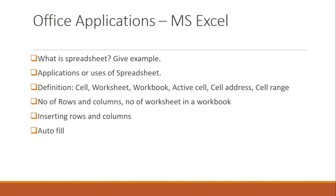Learn the definitions of key Excel terms: cell, worksheet, workbook, active cell, cell address, and cell range. A worksheet is a single page, and a workbook is a collection of worksheets. Also see the address of the first cell, which is A1, the address of the last column, which is XFD, and the number of rows and columns, as these may appear in short questions.